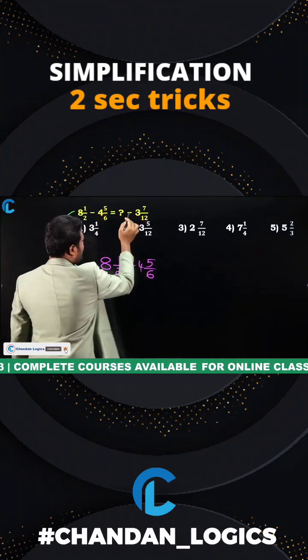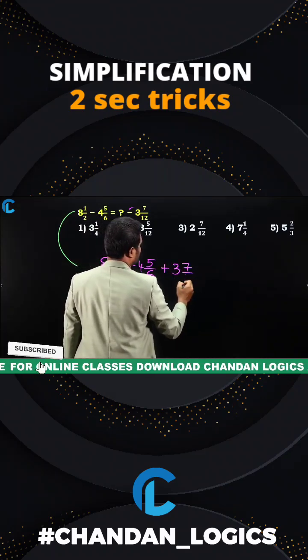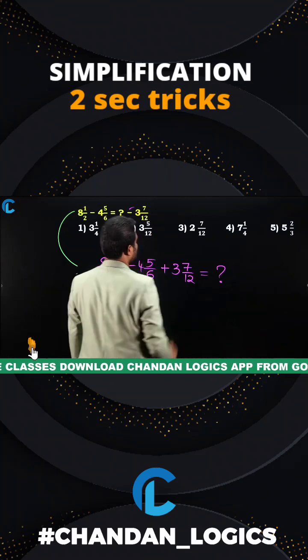Now actually this is on the right hand side. If it comes to left hand side, this minus will change to plus, yes or no? This minus will change to plus, plus 3 and 7 by 12 is equal to question mark, yes or no?